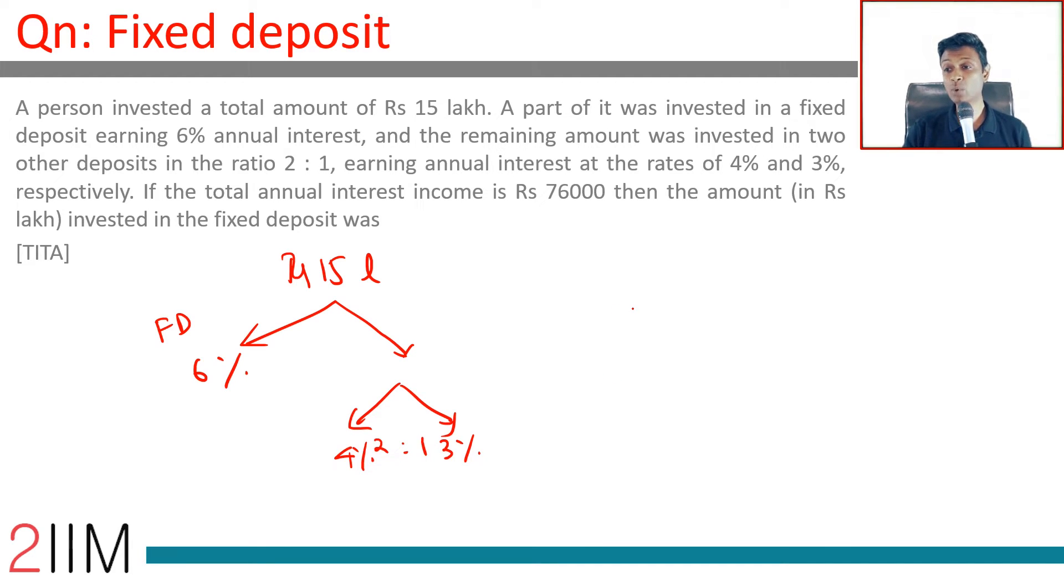Let's say X lakhs is invested in the fixed deposit, then 15 minus X is invested in the other two. So what will be invested at 4%? 2/3 of (15-X). At 3%? 1/3 of (15-X).